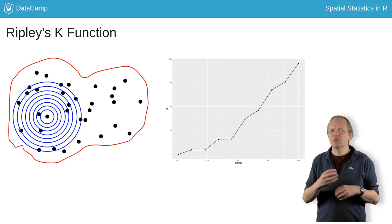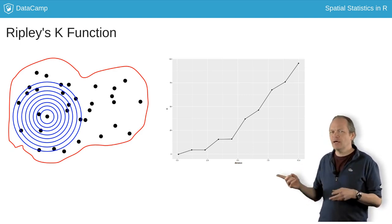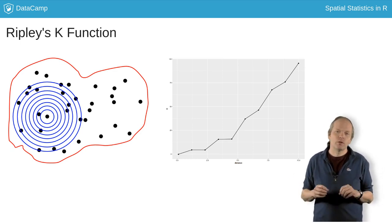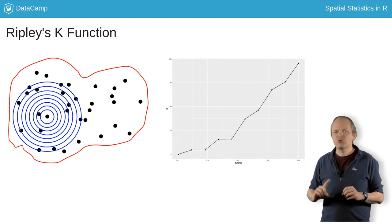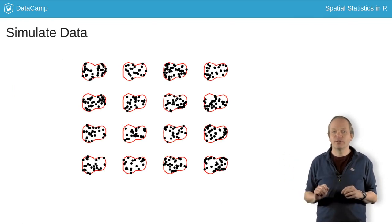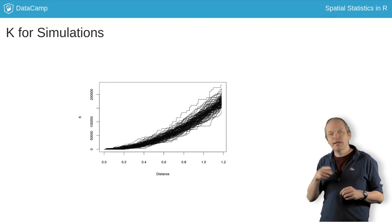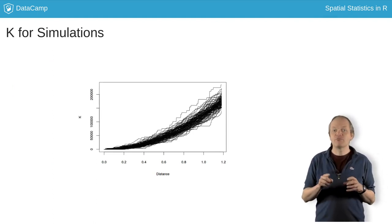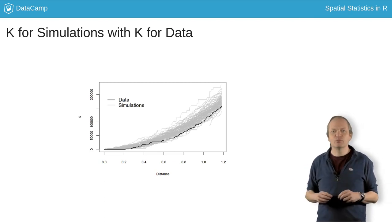But how much variation can be expected from an estimate of K, so that it can be used as a test for complete spatial randomness? Well, first create 99 completely spatially random point patterns in your window, and compute the 99 estimates of K. You can plot them. Now compute K for the data and plot it over the simulation estimates.